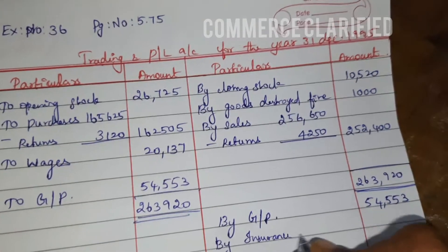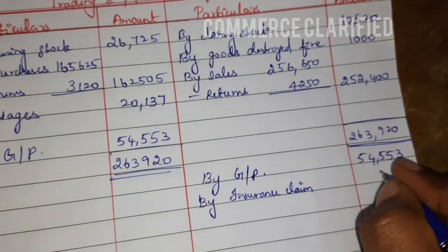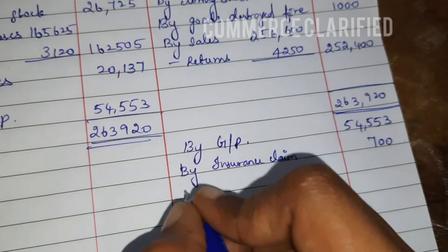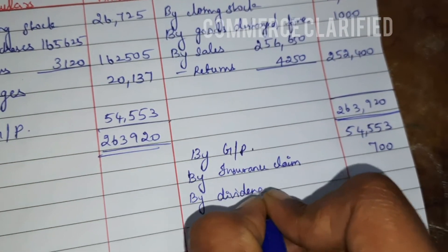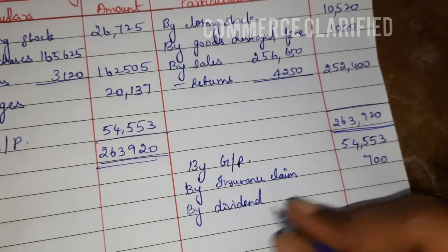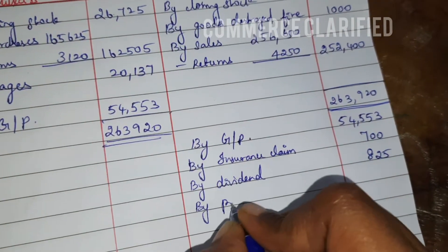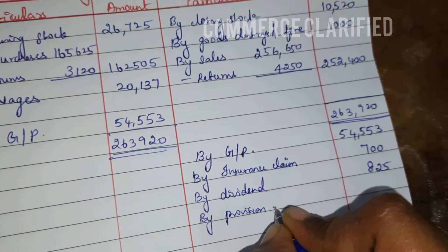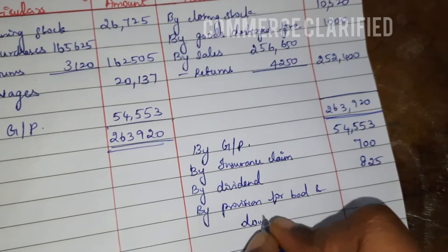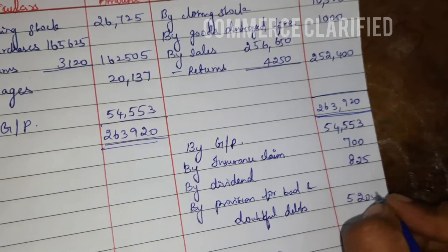On the credit side of the P&L account: by insurance claim — income side is 700. Next, by dividend — this is revenue in nature, so income is 825. Next, credit provision for bad and doubtful debts on the credit side is 5,200.